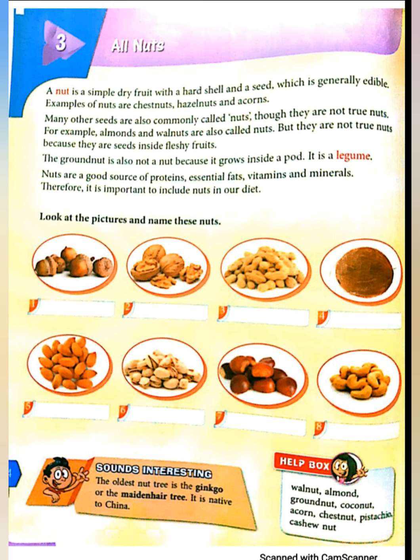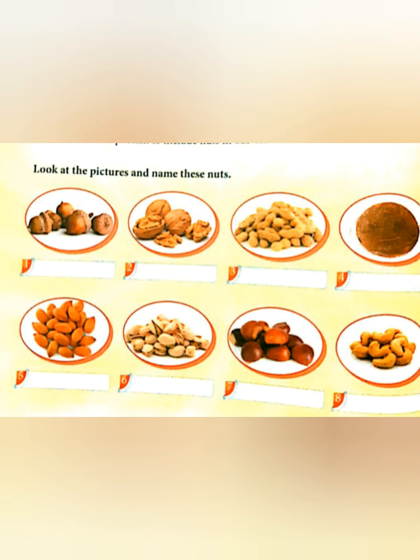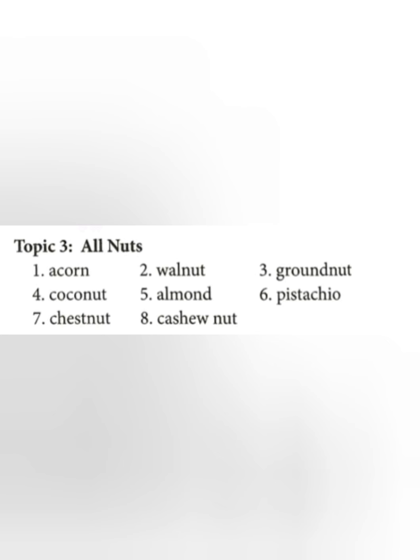Therefore, it is important to include them in your diet. Now look at the pictures and name these nuts. Number 1: Acorn. Number 2: Walnuts. Number 3: Groundnuts. Number 4: Coconut. Number 5: Almond. Number 6: Pistachio. Number 7: Chestnut. Number 8: Cashew nut. And the answers are given here for you.